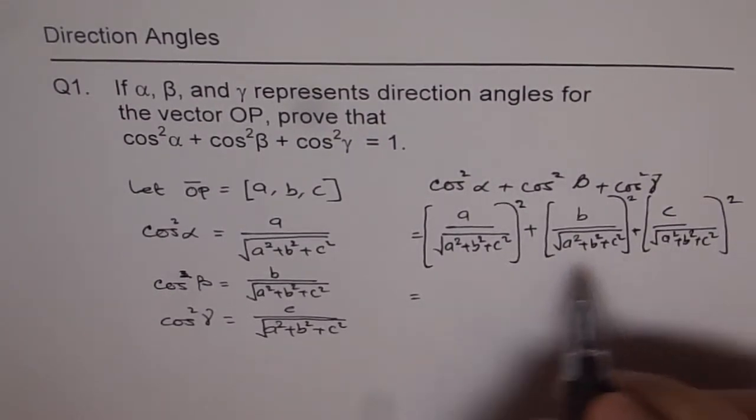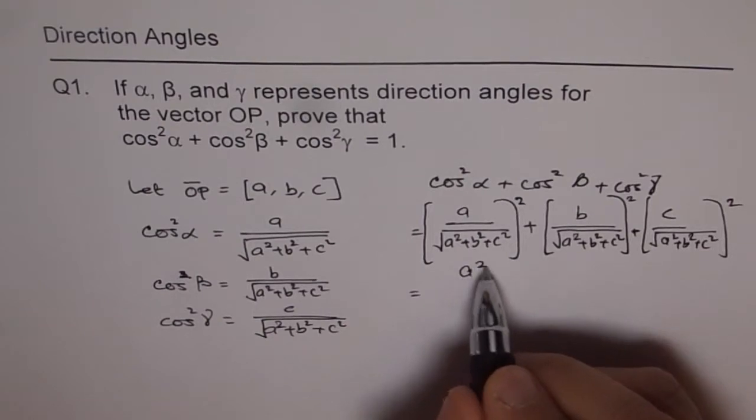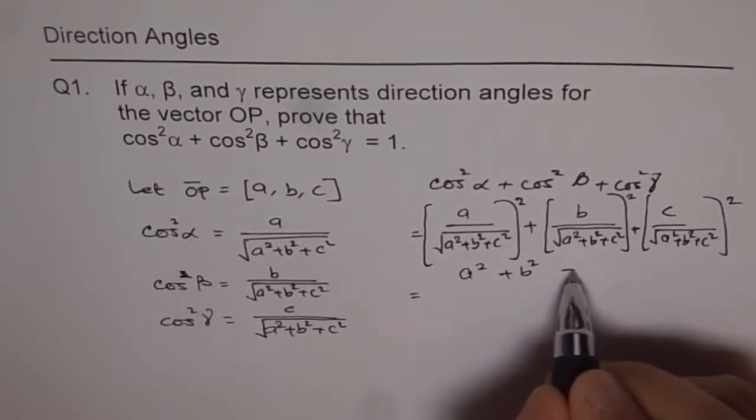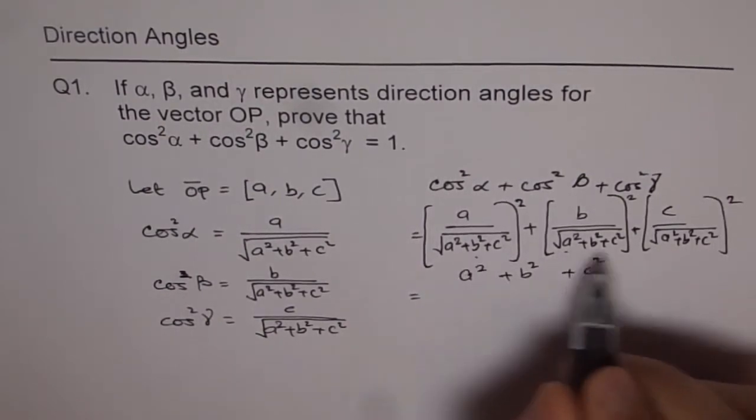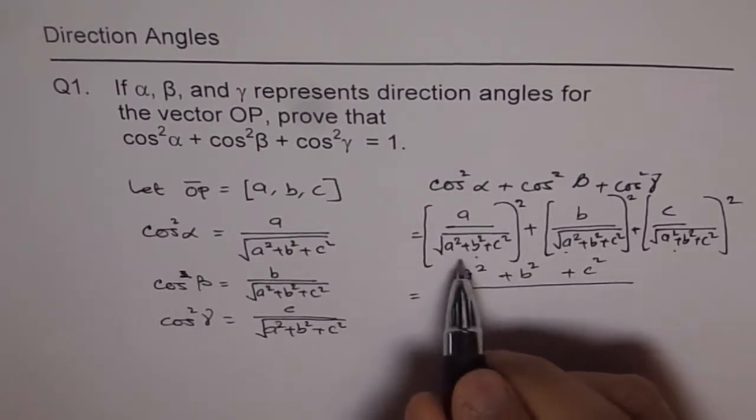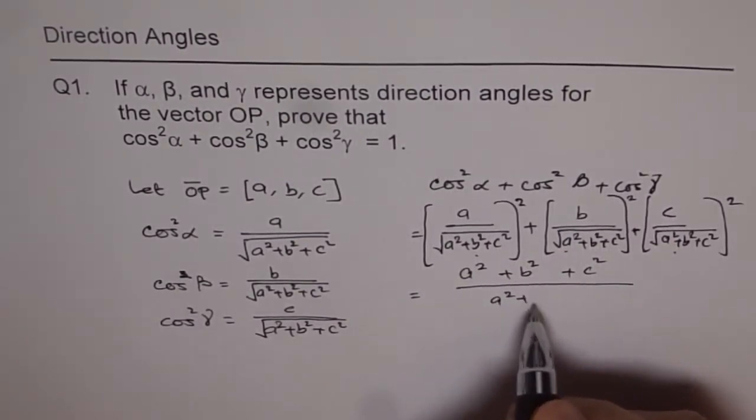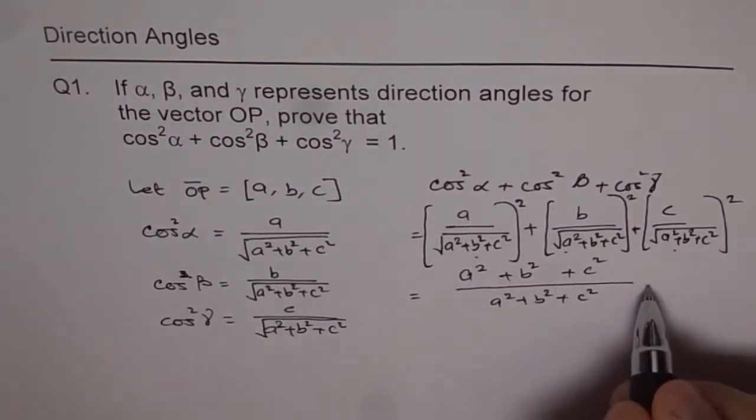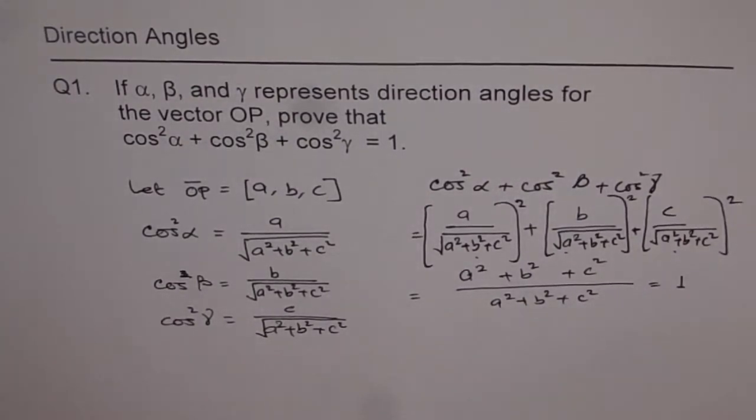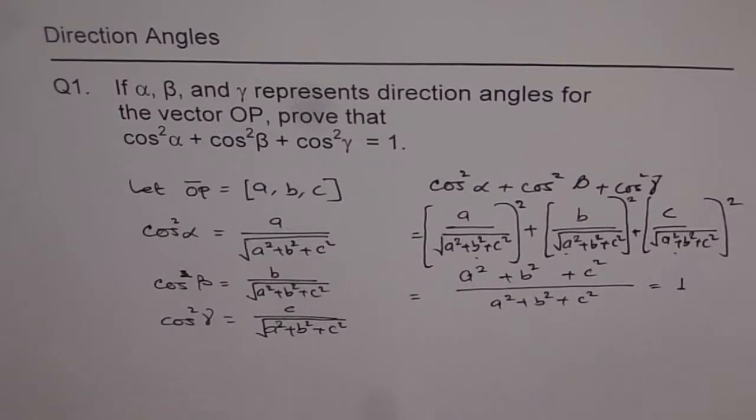And that's what we need to do. If you add them up, you get A square plus B square plus C square and the common denominator is also square of square root of A square plus B square plus C square. And as you can see, it is just one. So it's an identity. Cos square alpha plus cos square beta plus cos square gamma is always equals to one.